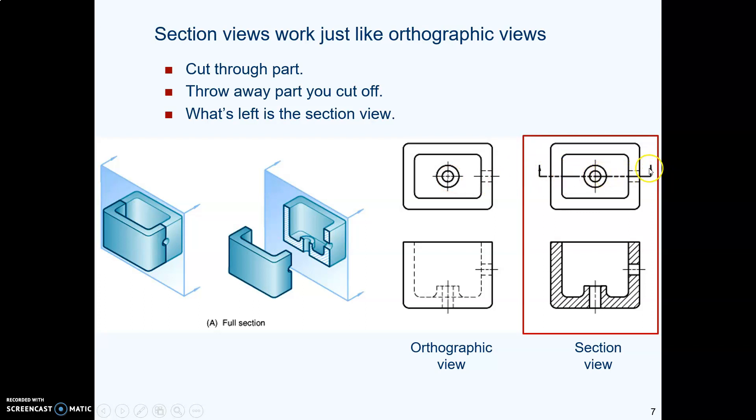Here's the part that was cut in half. This arrow shows where it was cut. You throw away the front part and what's left is the section view. So you're looking at this cut edge looking towards the back of the part. It's the glass box again.